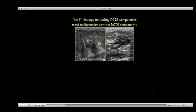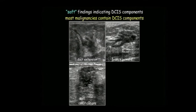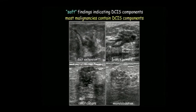Here are the soft findings. The duct changes include duct extension and branch pattern. These are enlarged ducts, maybe distorted. They might be hypoechoic, beaded, or angular, but they're outside of mass. In the old BIRADS they were called 'effect on surrounding tissue'; in the new BIRADS they're just called duct changes.